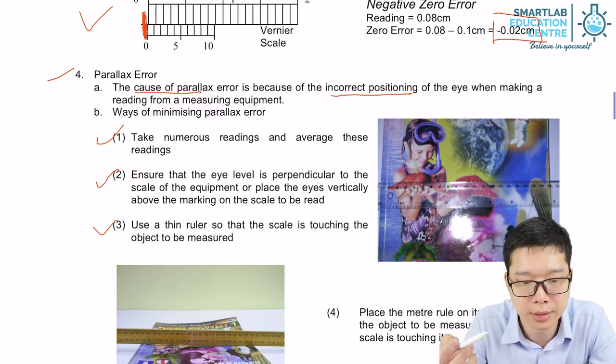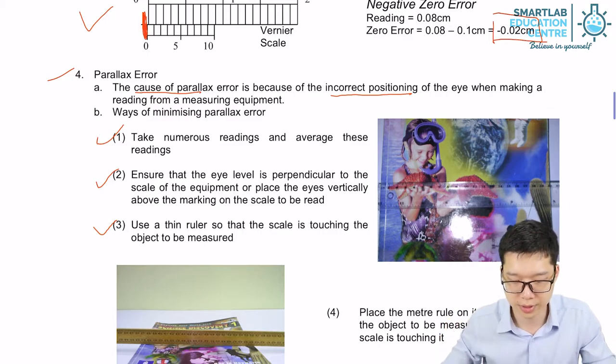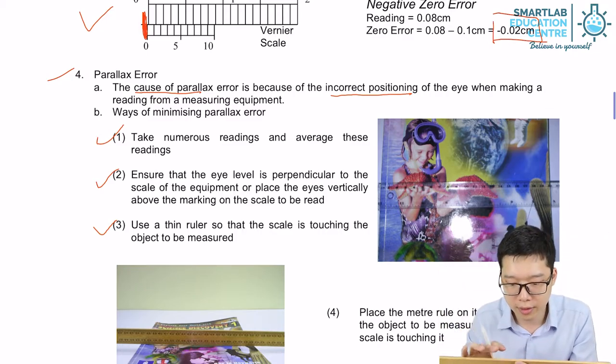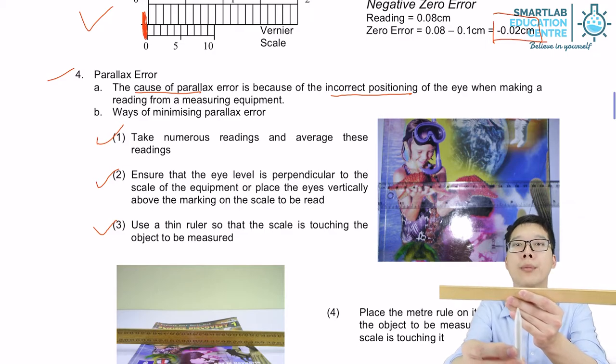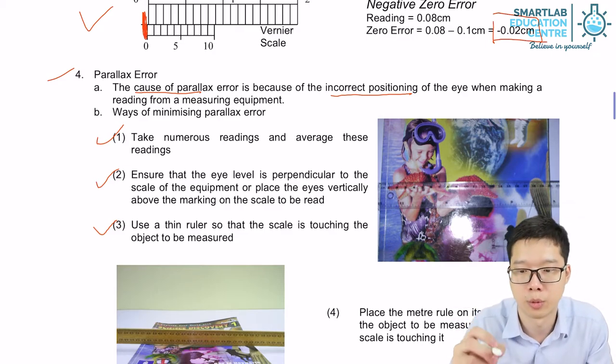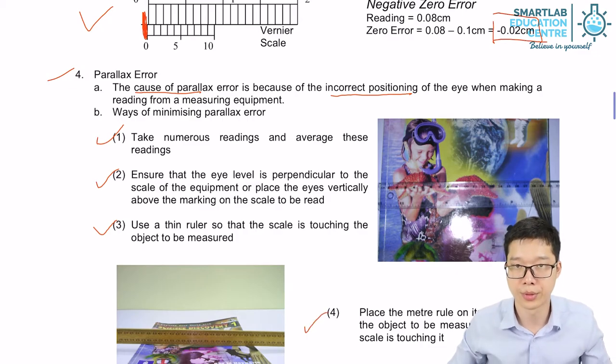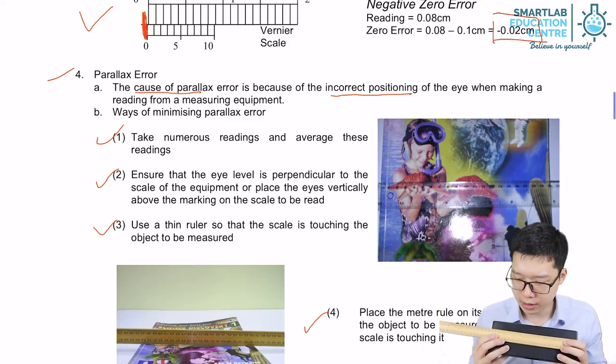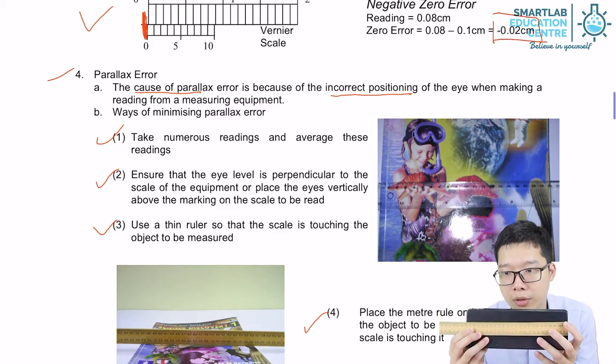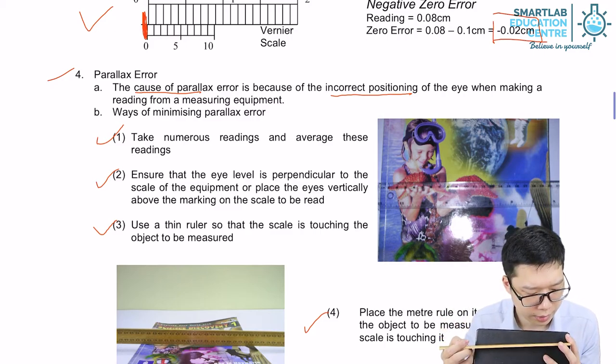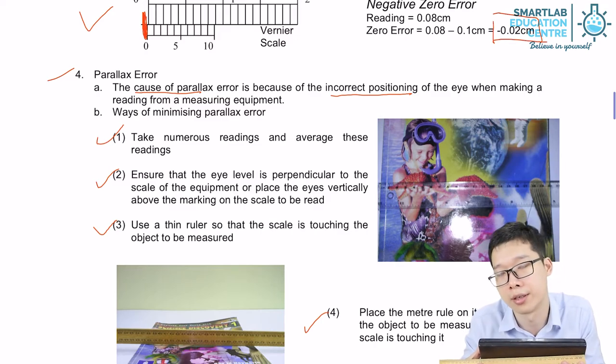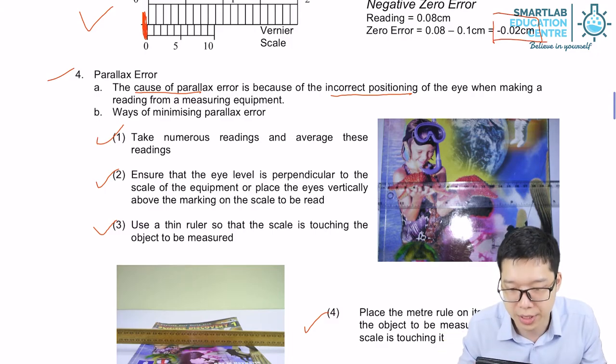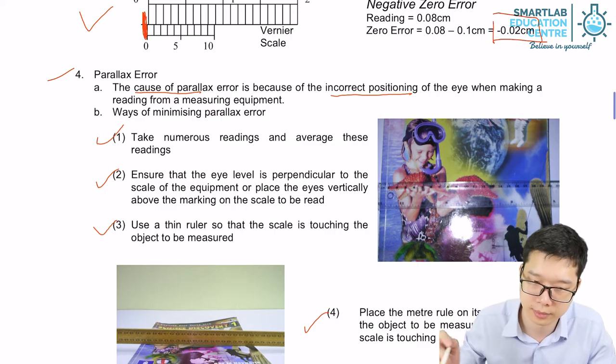Thirdly, use a thin ruler, because if you're using a very thick ruler, it's very hard for you to align your eyesight because the item itself is further away. So with a thinner ruler it will be more accurate. And if you are using a thick ruler like this half-meter rule, instead of measuring the length using it as a normal ruler, it's better for you to lift it up so that the scale, the marking, can touch the object itself. This way we can have a more accurate reading.